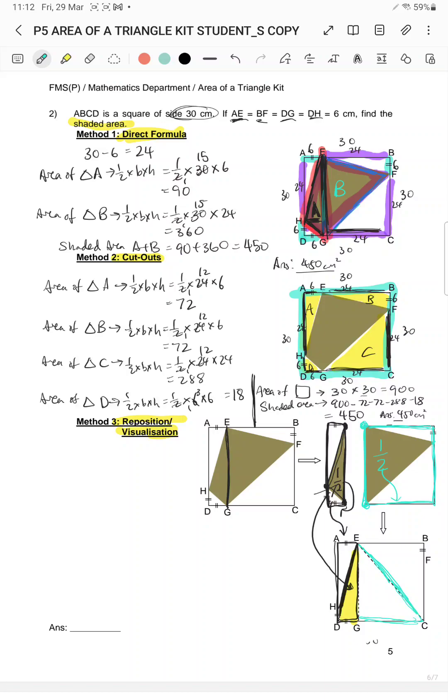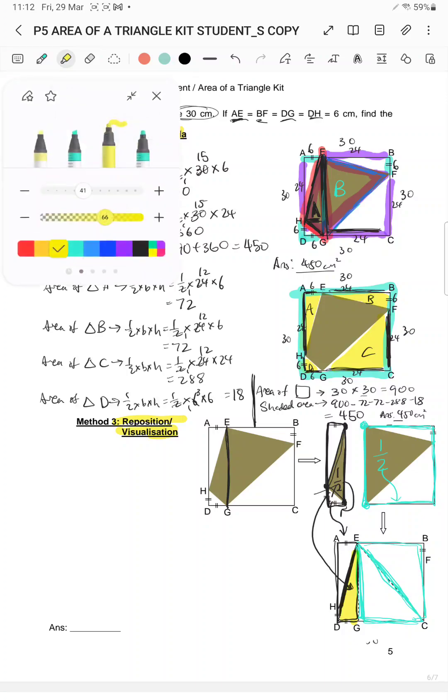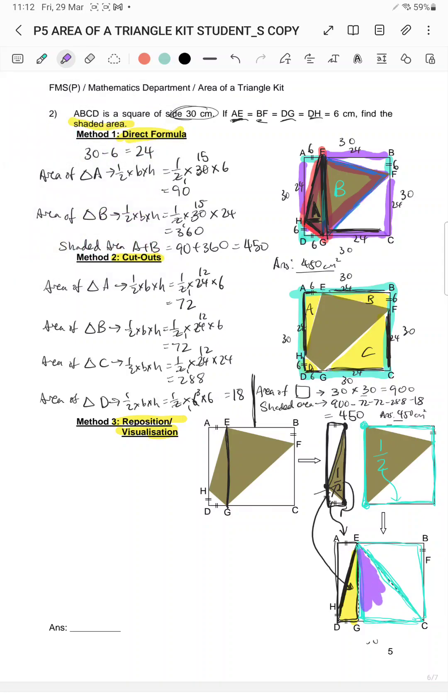So now it transforms to be this. We reposition the triangle to look like this, half of the rectangle. This has been repositioned, still half, same.